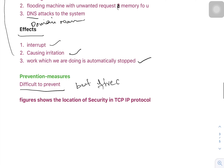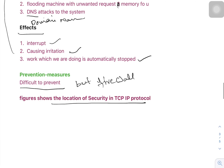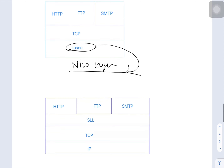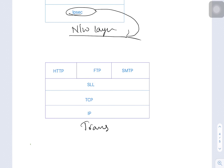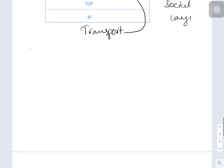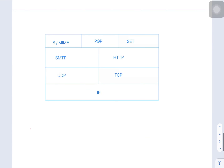The locations of security in the TCP/IP protocol are: first, the network layer — Internet Protocol (IP) provides security to the network layer. Second, the transport layer — SSL (Secure Socket Layer) provides security to the transport layer.